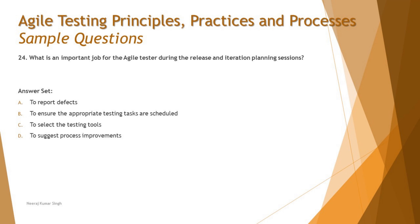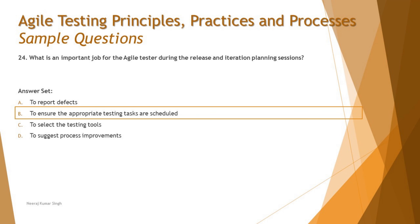Process improvement suggestions happen at the retrospective, which occurs at the end of the sprint after the process is complete — gathering lessons learned from all contributors to improve upcoming activities, processes, or projects. That is not something that happens at the planning phase. So put together, the right answer here is B — to ensure the appropriate testing tasks are scheduled with a clear timeline defined for the testing team.